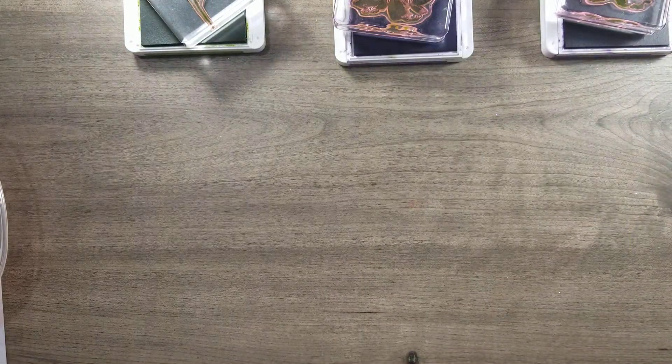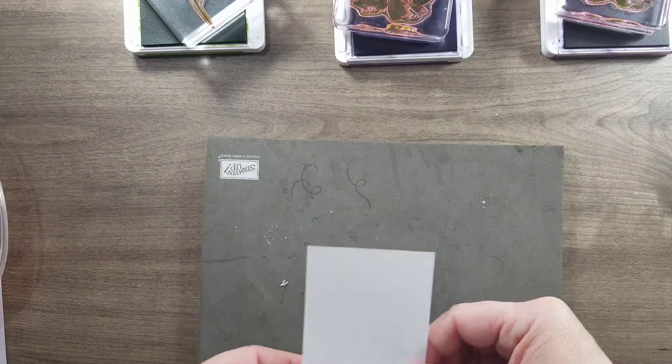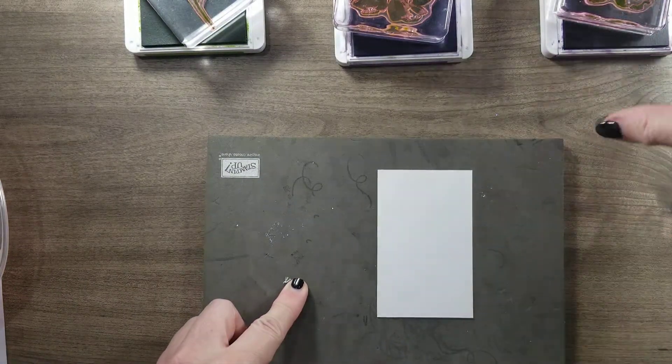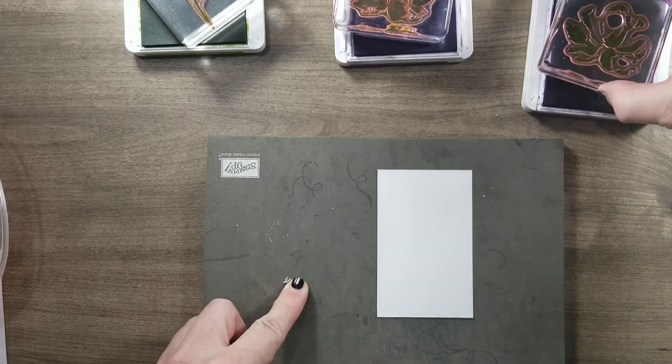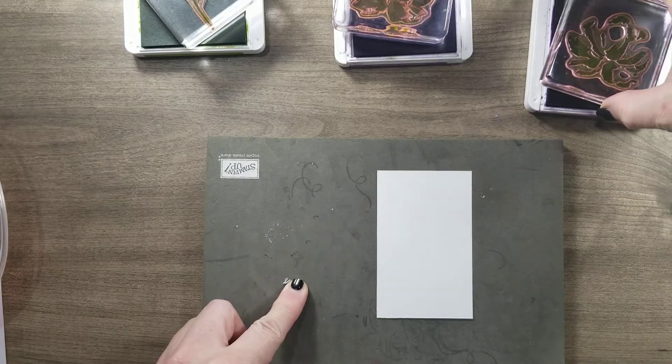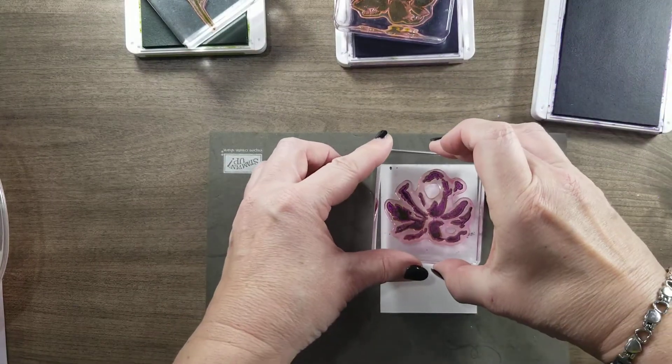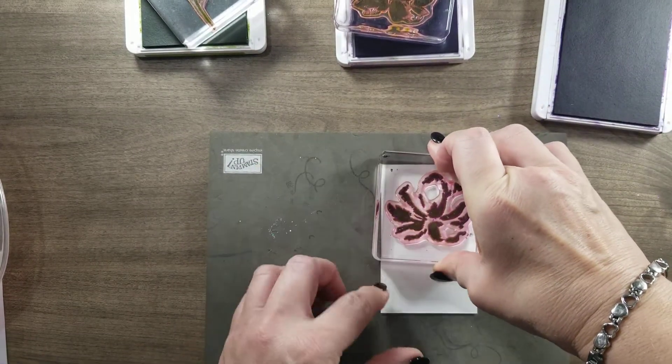I'm going to use my paper piercing pad with white cardstock. I'm using Gorgeous Grape ink and I'm just going to stamp that on there.